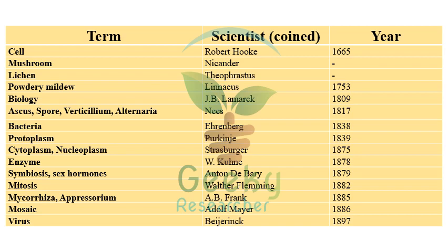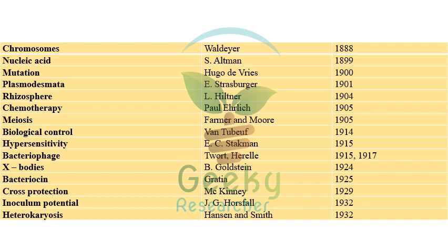'Protoplasm' was coined by Purkinje in 1839. 'Cytoplasm' and 'nucleoplasm' by Strasburger in 1875. 'Enzyme' by W. Kühne in 1878. 'Symbiosis' and 'sex hormones' by Antoine de Bary in 1879. 'Mitosis' by Walter Flemming in 1882. 'Mycorrhiza' and 'appressorium' by AB Frank. 'Mosaic' by Adolf Mayer. 'Virus' by Beijerinck. 'Chromosome' by Waldeyer in 1888. 'Nucleic acid' by Altmann in 1889.